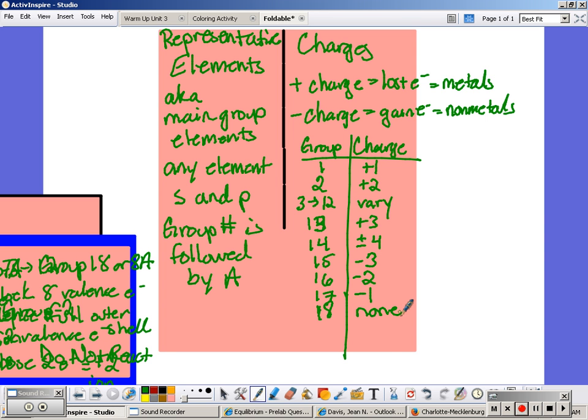Now there are two transition metals that you're required to know the charge of and that's because they only form this one charge. Silver, for example, is always a plus 1. So that's the one of the two that you have to always know. Even though silver is in the transition metals, it will always be plus 1.